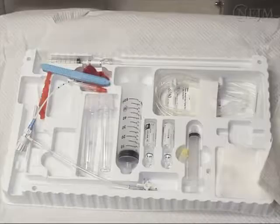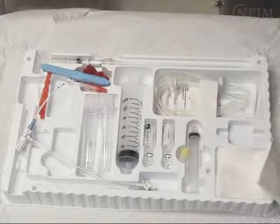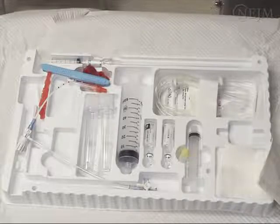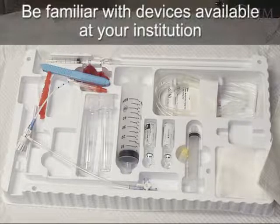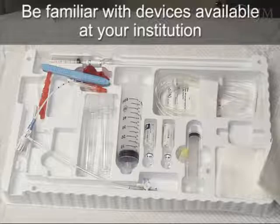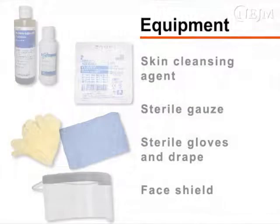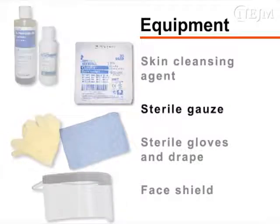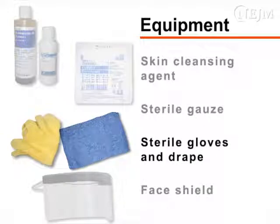There are various devices, frequently assembled in prepackaged kits, that can be used to perform paracentesis. You should be familiar with the specific devices available at your institution. For sterile preparation and administration of anesthesia, you will need a skin cleansing agent, sterile gauze, sterile gloves and drape, and a face shield.